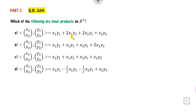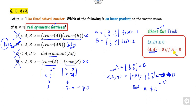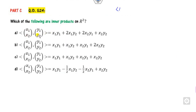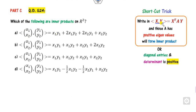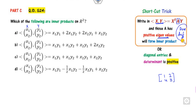Now look at another question: which of the following is an inner product? Again this involves inner products, so you can consider the positivity rules. Here these are vectors, so the shortcut is to write whatever inner product space expression in terms of components x and y, find the corresponding matrix A, and prove that it has all positive eigenvalues. You have to either prove it is positive definite, or prove that the diagonal entries are positive and the determinants are positive. When these two conditions are satisfied, the eigenvalues are positive.